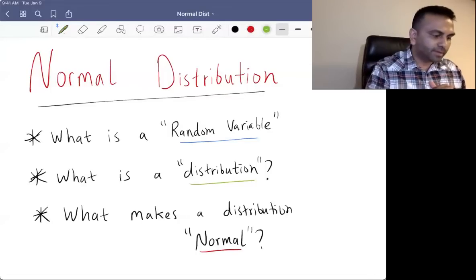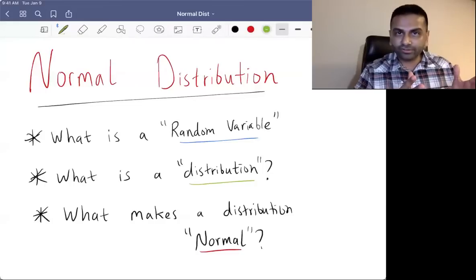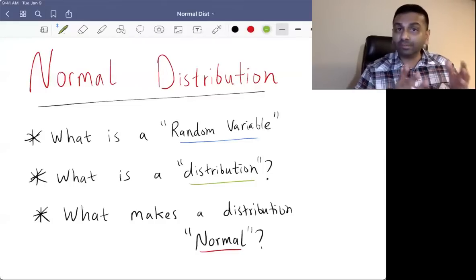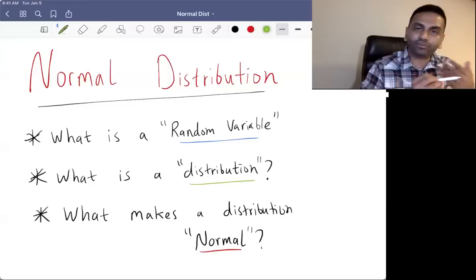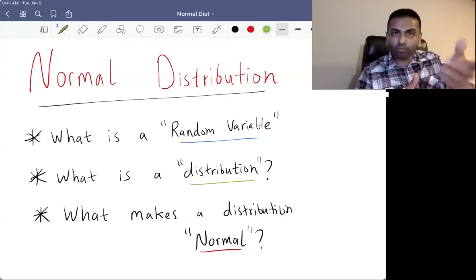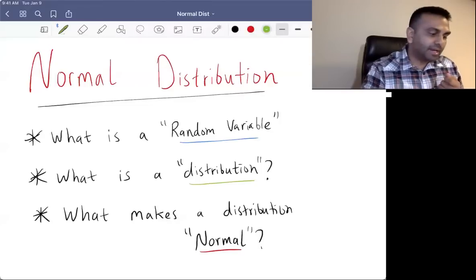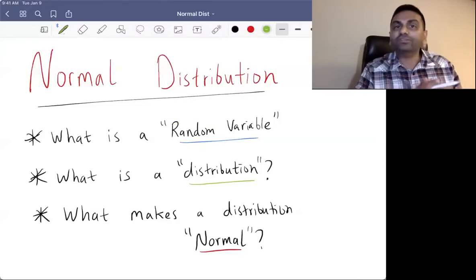So a random variable is precisely a variable that could take on one of many values, each value with a different probability. So some incomes are more likely than other incomes, right? And that's what makes this a random variable because for any one given instance of income, for any given individual's income, it's random. It's a random draw from a distribution that you know something about.